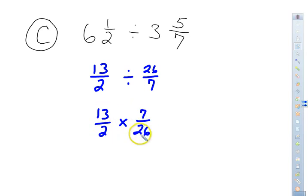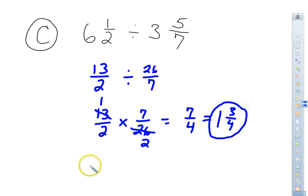Look for any common factors between the diagonals and 13 and 26 do have common factors which is 13. So divide this by 13 and I get 1, 26 divided by 13 is 2. Now I have 1 times 7 is 7 and 2 times 2 is 4. That is an improper fraction so we must make it into a mixed number. And we get 1 whole, 4 goes into 7 once, subtract that and you get 3 fourths. 1 and 3 fourths is your answer.